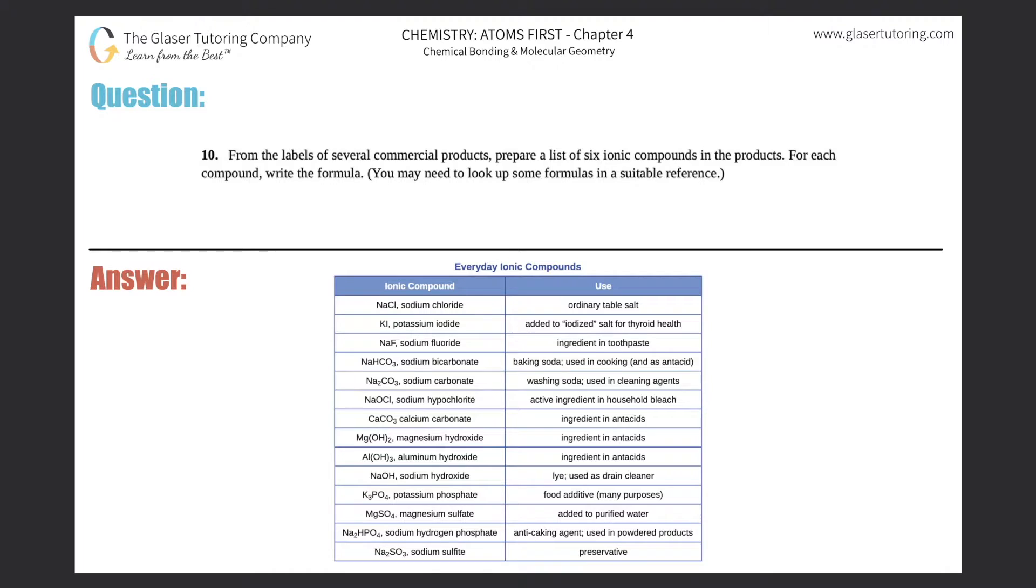Number 10: From the labels of several commercial products, prepare a list of six ionic compounds in the products. For each compound, write the formula. You may need to look up some formulas in a suitable reference.